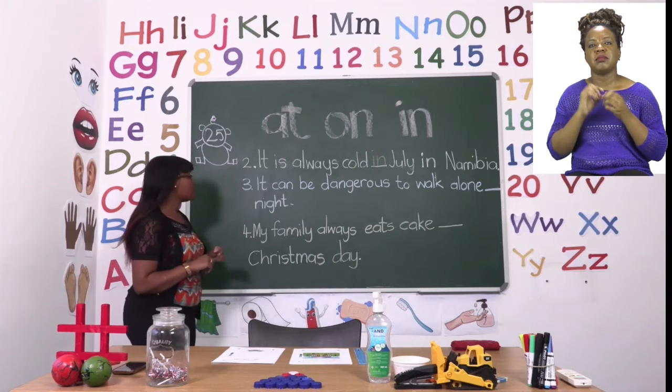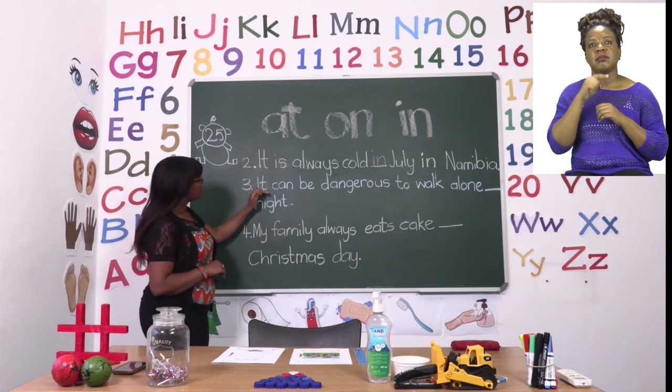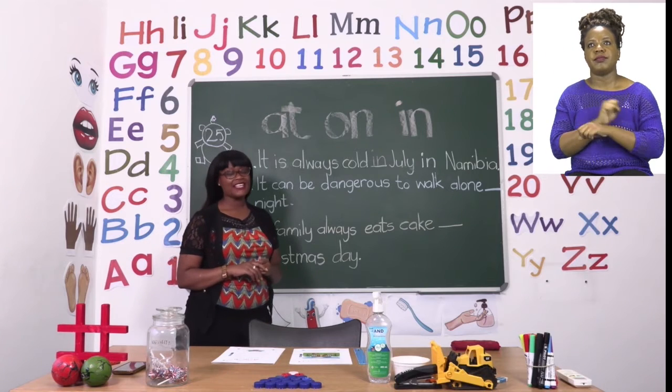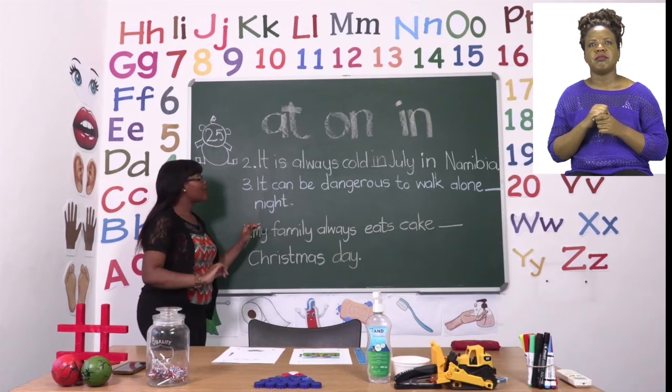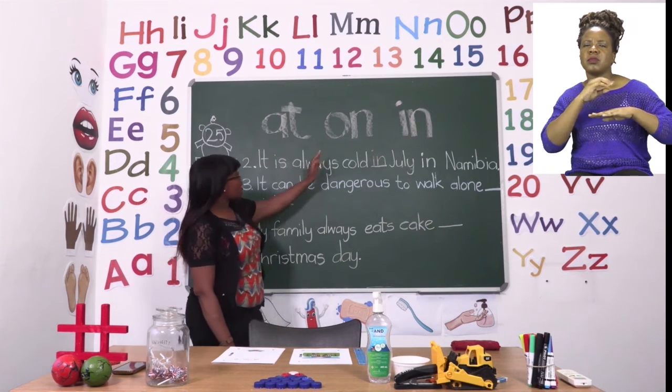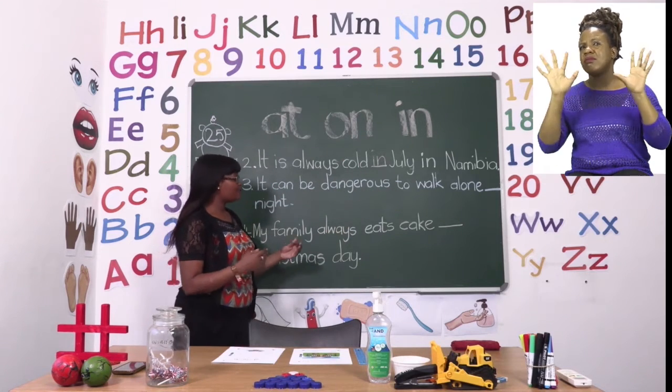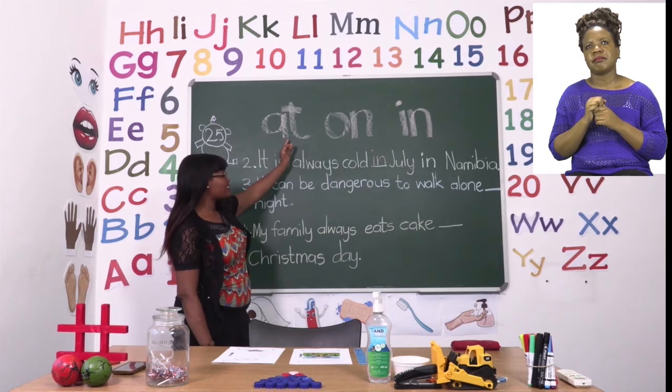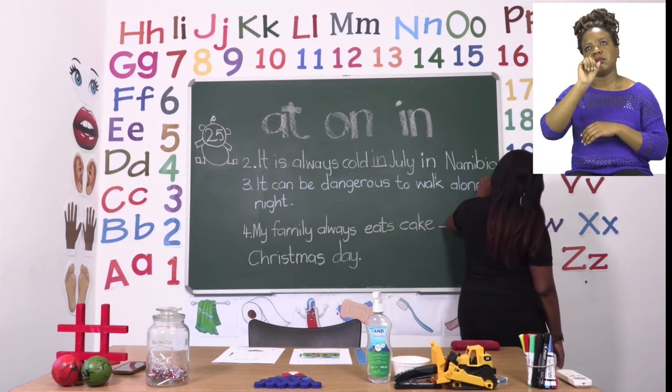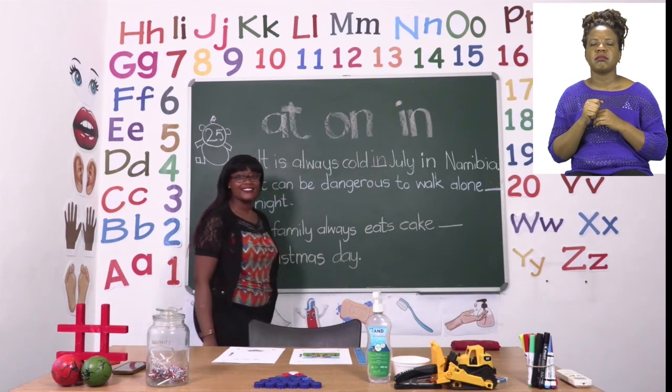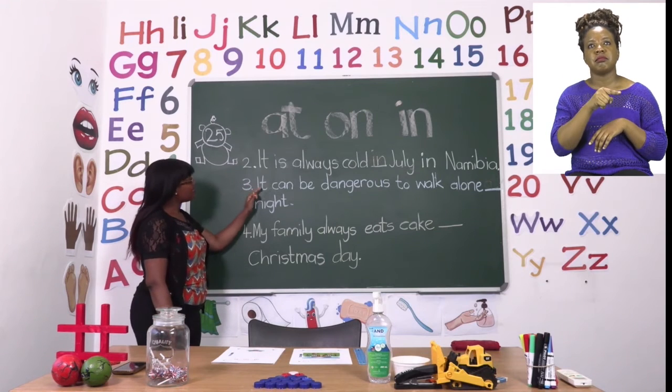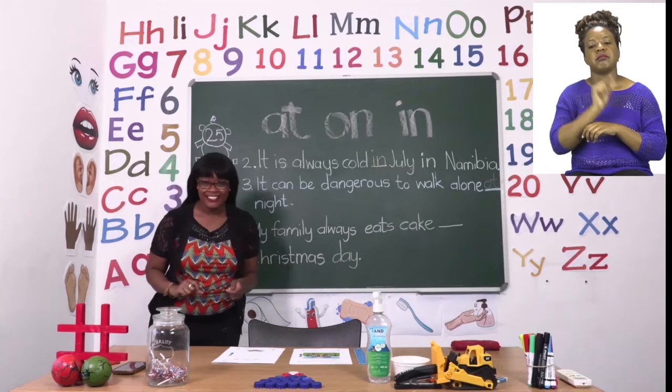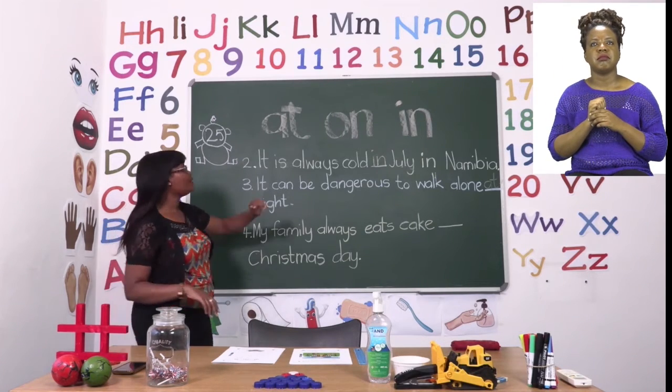Now let us move to number three. Number three says, let's read it together. It can be dangerous to walk alone dash night. Now we need to find a preposition that is correct for this sentence. If we say on night it doesn't make sense and if we say in night that also doesn't make sense. So our answer today boys and girls is at night. So we're going to write our word at and then after that we're going to say our sentence again. Let's read. It can be dangerous to walk alone at night. Now our sentence is correct and it is beautifully laid out with our preposition.